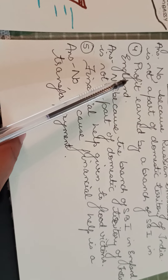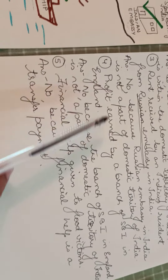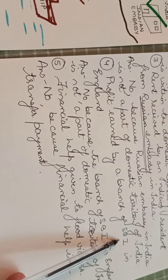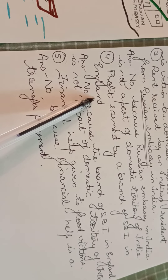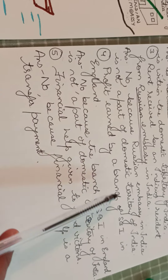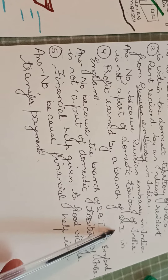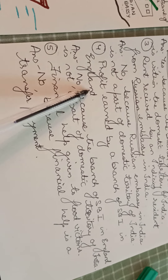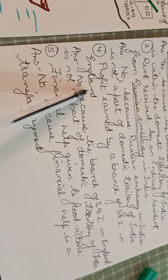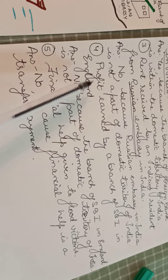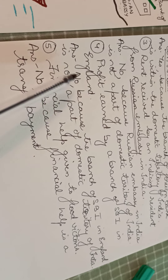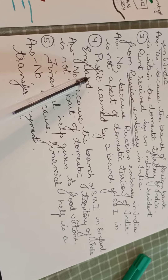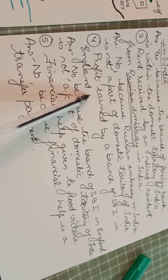Fourth point: profit earned by a branch of State Bank of India in England. Where is this branch of Indian bank located? It is located in England and hence it is not in India's domestic territory — it is located in the domestic territory of England.